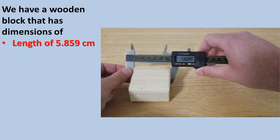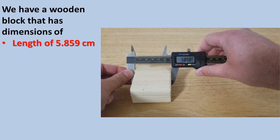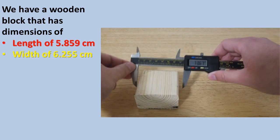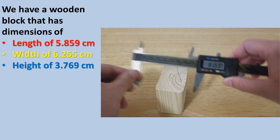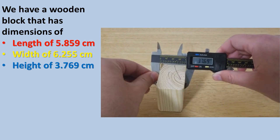The length of the block, as measured, is 5.859 centimeters. The width is 6.255 centimeters. And finally, the height is 3.769 centimeters.